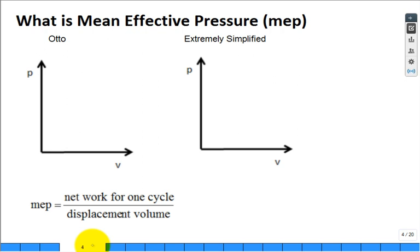There's another metric associated with these cycles. It's the mean effective pressure. So let's think about the Otto cycle.